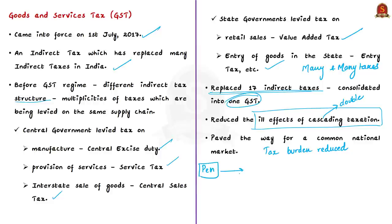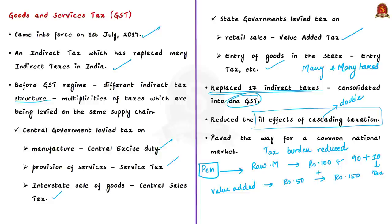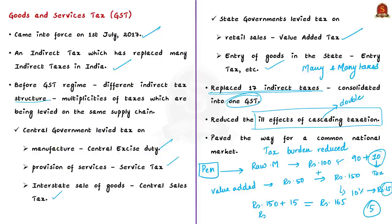For example, a manufacturer makes pens and obtains raw materials for rupees 100, which includes 10% tax — meaning she pays 10 rupees in tax for 90 rupees worth of materials. She then adds value of rupees 50, making the total product value rupees 150, on which another 10% tax of rupees 15 is due, making the final price rupees 165. Under the GST system, the additional tax can be applied against the previous tax paid, bringing the effective tax rate to rupees 15 minus rupees 10, which is rupees 5. So the price of the final product is rupees 155, not 165. This is how GST removes the cascading effect — the tax on tax, or double taxation.